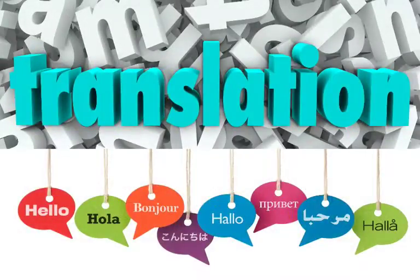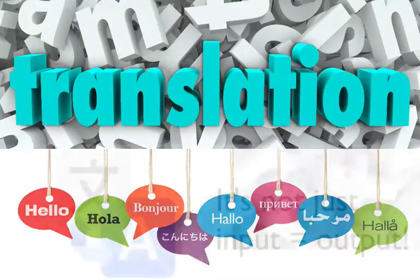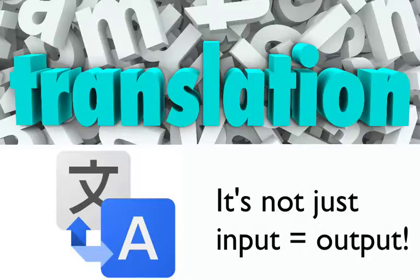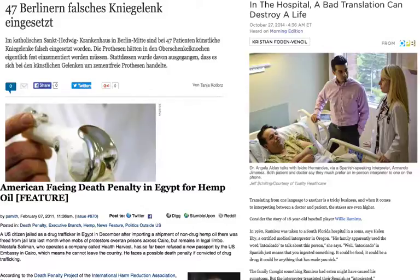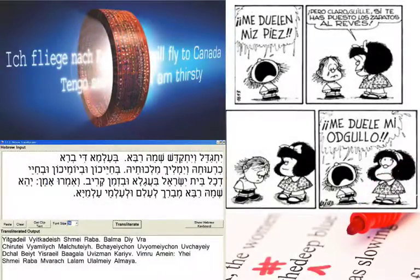Translation is the rendering of a written thought from one language to another. This is a more complicated task than it might sound, and it definitely shouldn't be overlooked. If not done right, the consequences can be tremendous, leading to everything from wrongly implanted artificial knees to being put on death row. Translation includes a number of complex disciplines, such as glossary and terminology management, translation memories, machine translation, editing, proofreading, and transliteration.